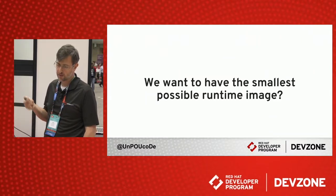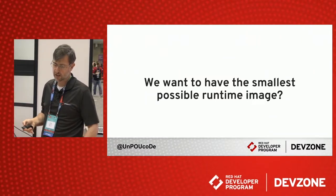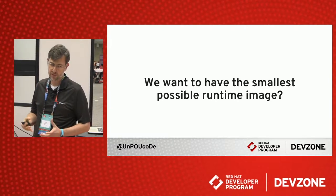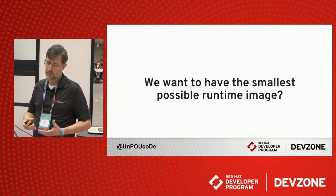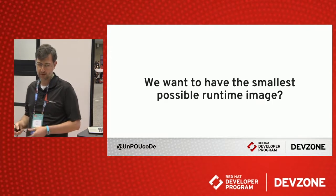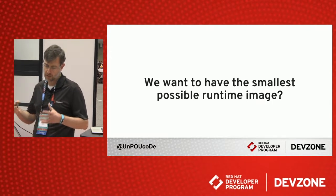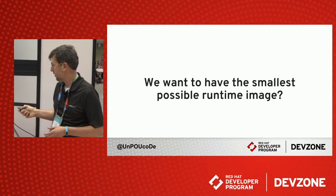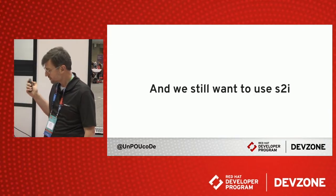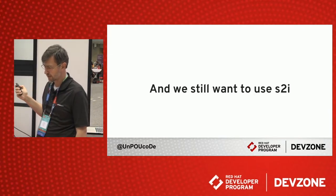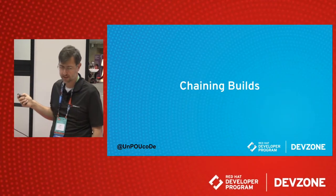A third reason is that you may want the smallest possible image. Because source-to-image images handle both building and running your applications, they have a lot of dependencies. You may want a small image to run in production — the smallest possible image. But we still want to use source to image. So the answer is chaining builds.